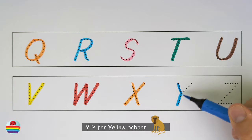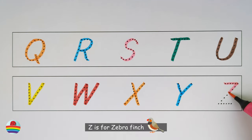Y. Y is for yellow baboon. Z. Z is for zebra finch.